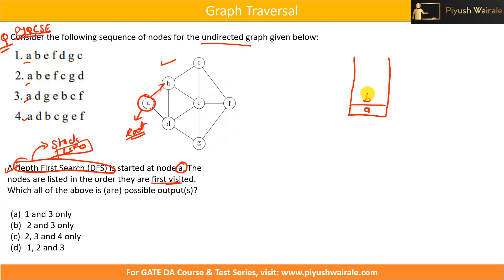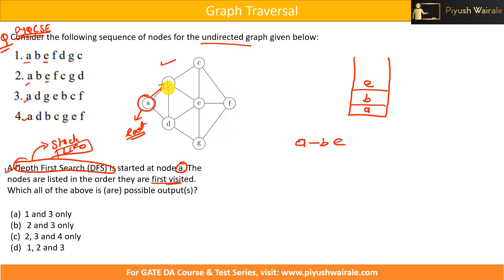From B, I can go to C, E, D, or A — but A is already visited. So from B I can go to C, E, or D. Looking at the options, after B I need to go to E. I add E to the stack. From E, I can go to B, D, C, F, and G — but B is already in the stack. Looking at the options, in both remaining cases F comes next, so let's go to F.